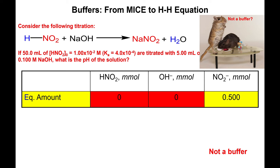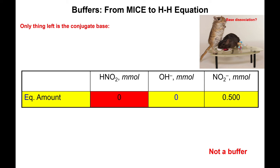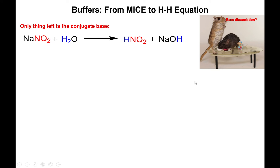So what we're going to do is account for the fact that all we have present in water right now is nitrite — 0.5 millimoles of nitrite to be exact. We have to consider the reactivity of nitrite with water: nitrite acting as the base reacting with water, generating some of its conjugate acid HNO₂ and some hydroxide in the process.